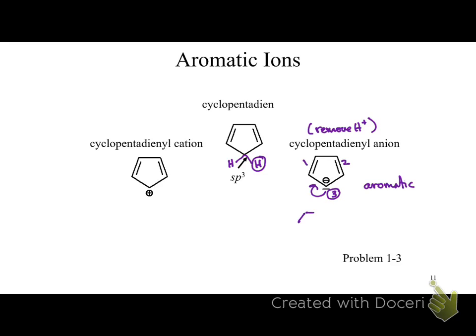You can draw multiple resonance structures to show the sp2 nature of that carbon. Moving the electrons gives a negative charge in different positions around the ring. In most of the five resonance structures, that carbon is sp2 hybridized — confirming the aromatic character of the cyclopentadienyl anion.